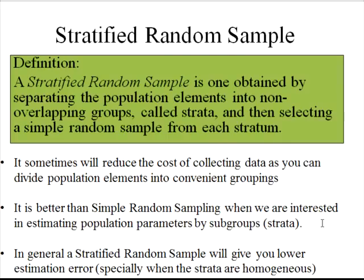You can also use a stratified random sample. You obtain these by separating the population elements into non-overlapping groups — at least two groups called strata — and then selecting simple random samples from each stratum. Why would you do this? Because sometimes it reduces the cost of collecting data. In many cases it is better than simple random samples when estimating population parameters by subgroups or strata. Also, when the strata are homogeneous in the variable you're estimating, it will give you lower estimation error.